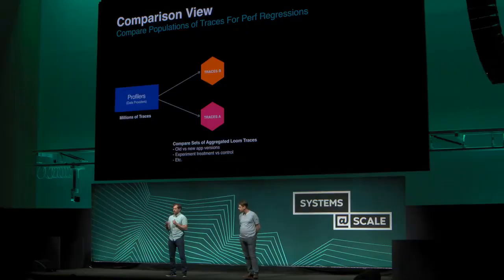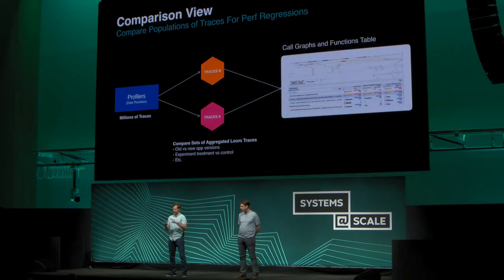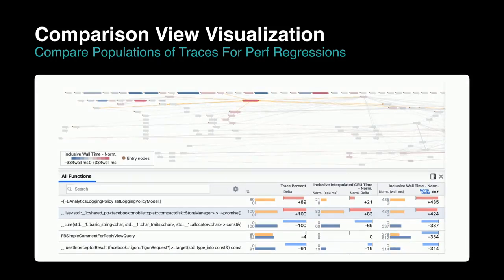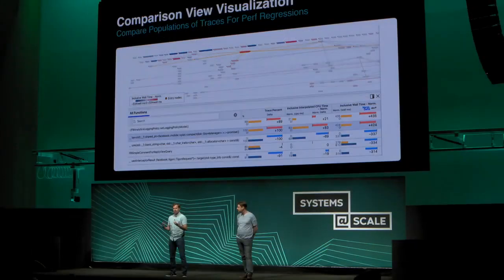One of the interesting things we do is compare populations of traces for performance regressions. You've got a set of traces A and a set of traces B — maybe A comes from before an app release and B comes from after — and you get a visual representation of what changed, what was faster, what was slower, what was more expensive. We realized that Uber had a very similar set of visualizations they were building, but to do debugging of distributed systems problems rather than performance and regression analysis.